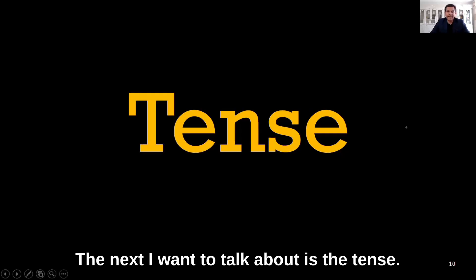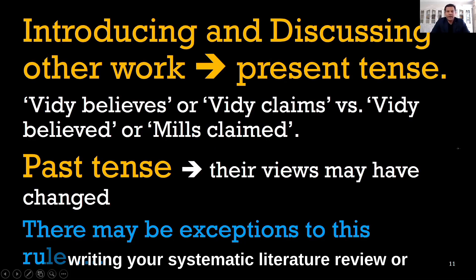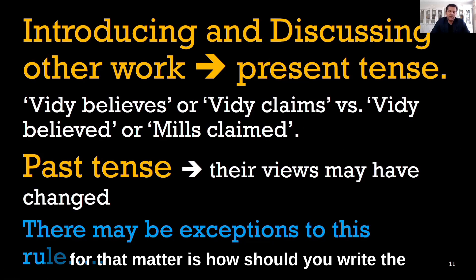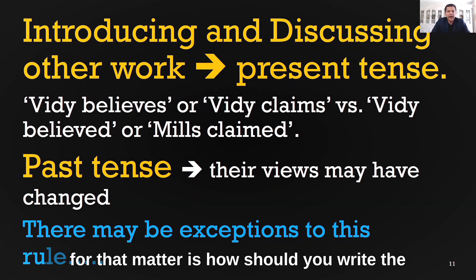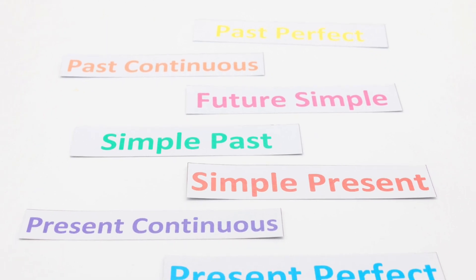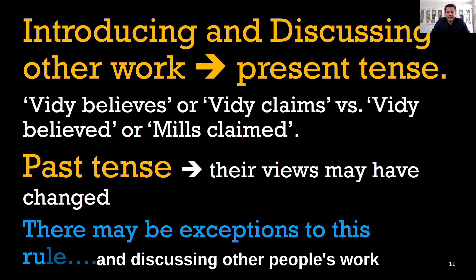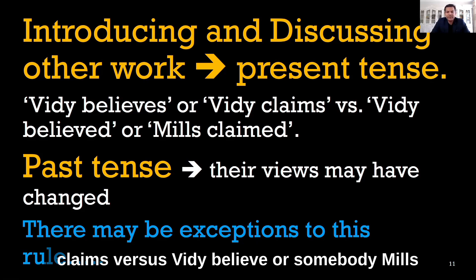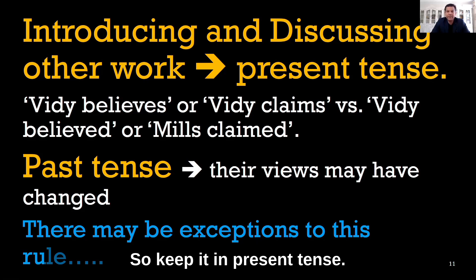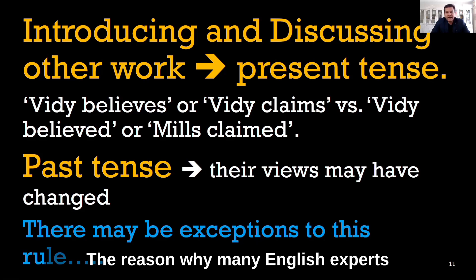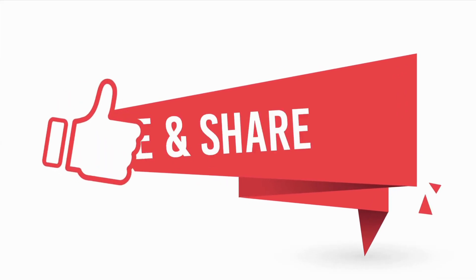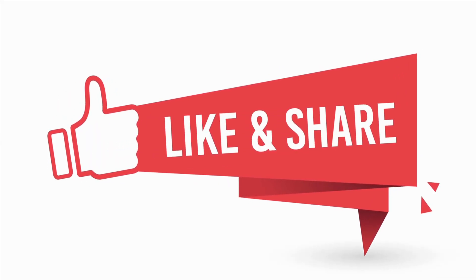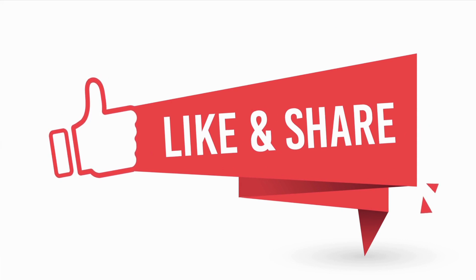Next I want to talk about tense. This comes up quite often when writing your systematic literature review — how should you write about or refer to authors? When writing the introduction and discussion and discussing other people's work, try to use present tense. For example, say 'Withy believes' or 'Withy claims' rather than past tense equivalents. Many academics and English experts suggest this because using past tense may give the impression that their studies are way too old.